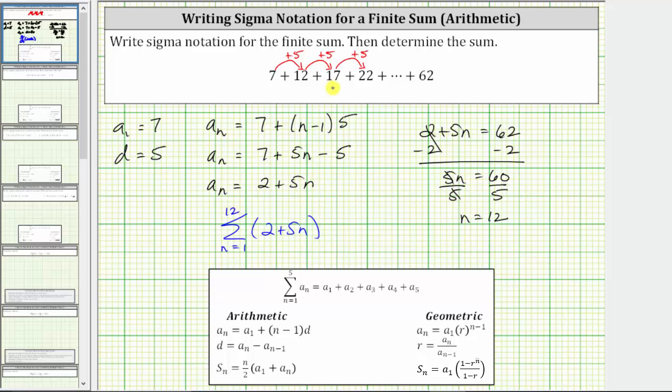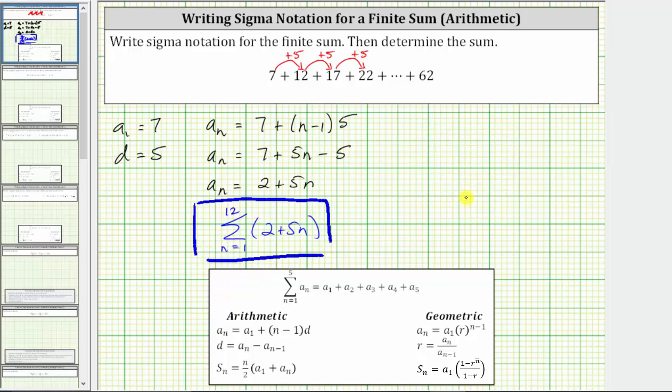And now we have the sum or the series written using sigma notation. And now for the second part of the question, we are asked to determine the partial sum or the sum of the given series.